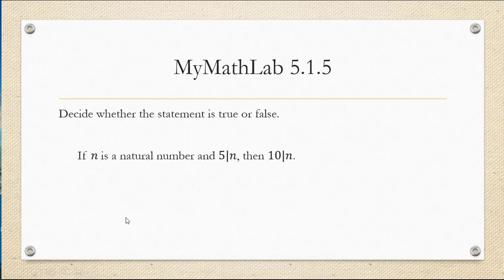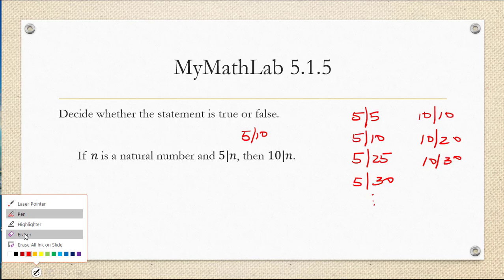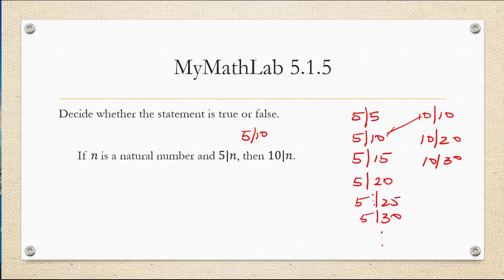Now this next one you might confuse with the previous one so you have to be careful. It says if n is a natural number and 5 divides n then 10 divides n. Okay now since 5 divides 10 you might think this is true but let's check. What are numbers that 5 goes into evenly that 5 divides? 5 divides 5, 5 divides 10, 5 divides 25, and 5 divides 30 and so on. 5 divides all the multiples of 5. But 10 only goes evenly into multiples of 10. 10, 20, 30. Oh I skipped 15 and 20 on my list here. Hold on I want to add them in there just to be complete. So 10 goes into 10 evenly, it goes into 20 evenly, it goes into 30 evenly, but it doesn't go into the 5, the 15, and the 25.